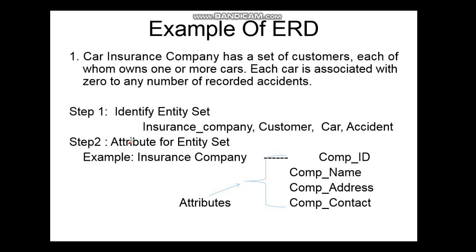Step 2 is to identify attributes for each entity set. For example, taking 'insurance company' as the entity set, the attributes can be: company ID, company name, company address, and company contact number. These are the attributes associated with the insurance company entity set.